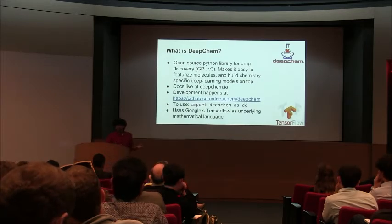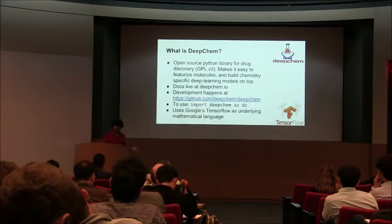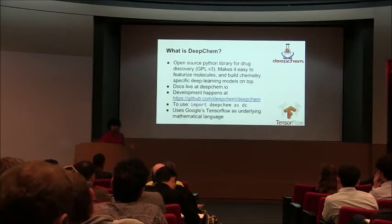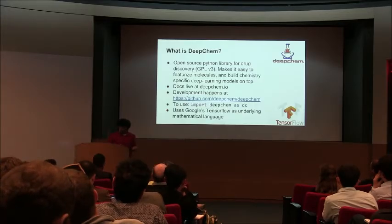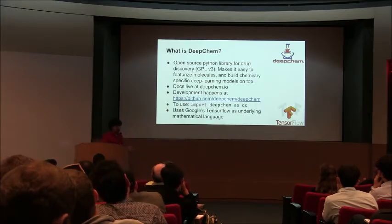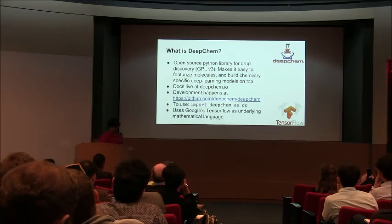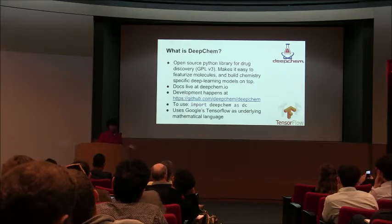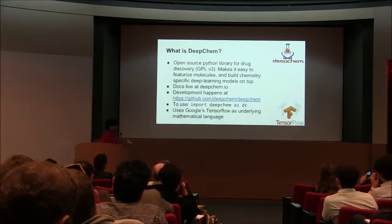This is what started me personally working on DeepChem. The idea is to make an open source library that makes it easy to do this sort of drug discovery. The docs live at deepchem.io, all development is done on GitHub, and everything is publicly available. To use it, you import DeepChem as DC — much like any other Python library — and from there you're basically off and going.